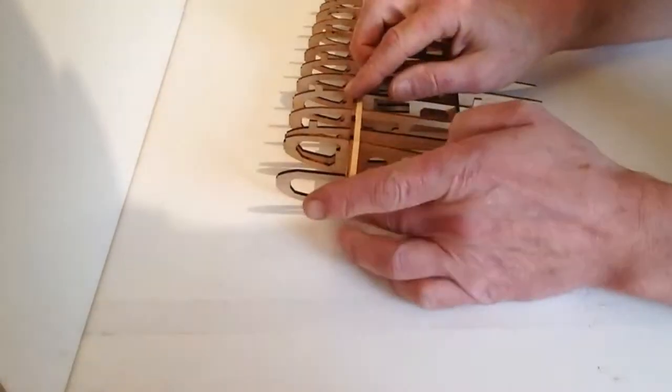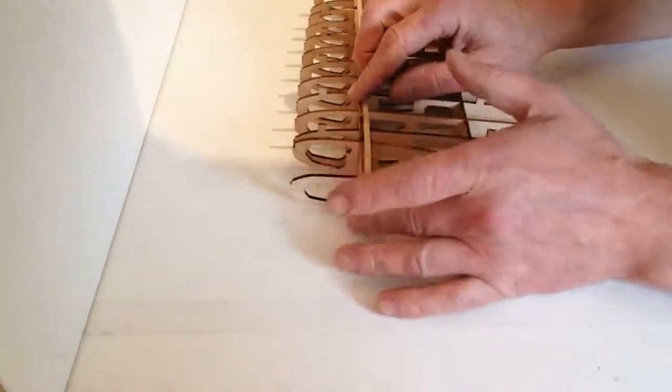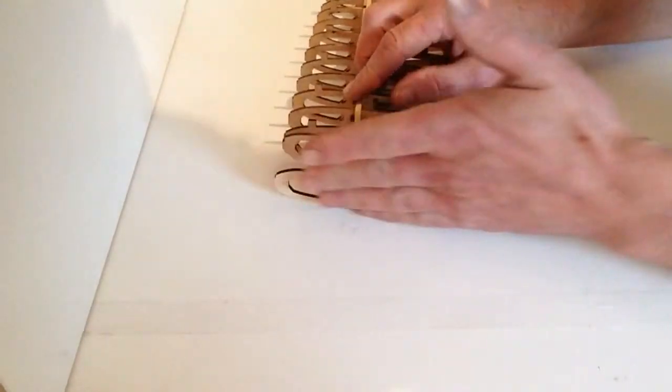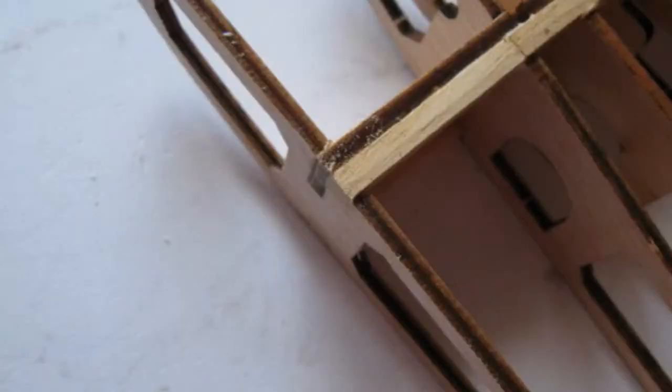Once that's dry, just cut off the remaining excess that overhangs there and give it a slight sanding just to smooth that off.